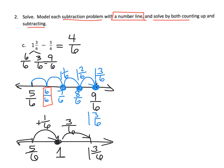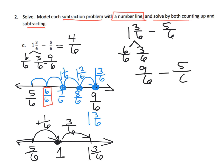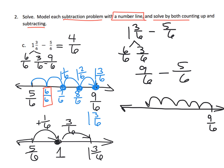The other way is through subtracting: 1 and 3 sixths take away 5 sixths. We know 1 and 3 sixths is 9 sixths, so we start at 9 sixths and go backwards 5: landing on 8 sixths, 7 sixths, 6 sixths, 5 sixths, 4 sixths. The answer is 4 sixths. So we have two options — solve the subtraction by counting up, or by counting backwards.